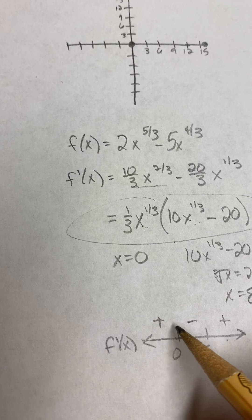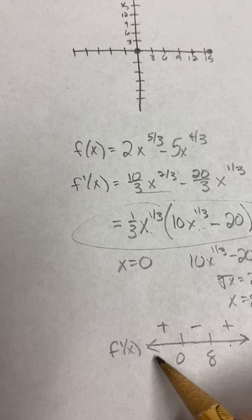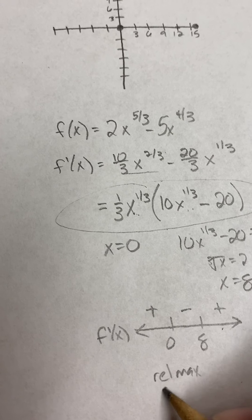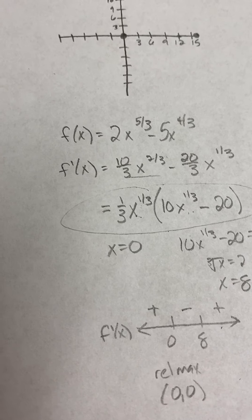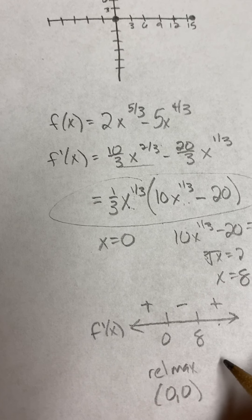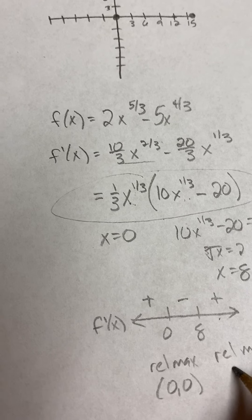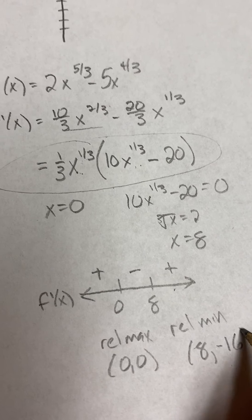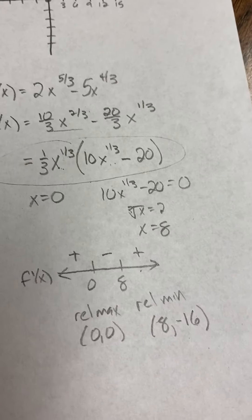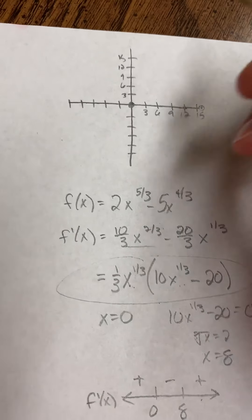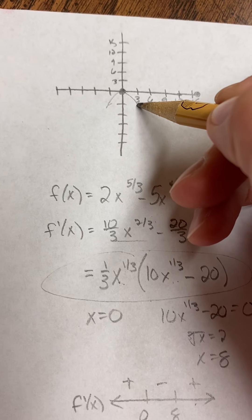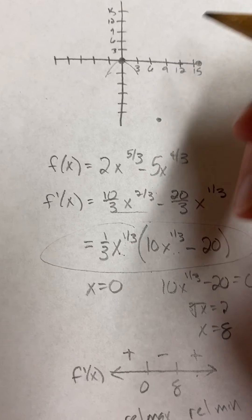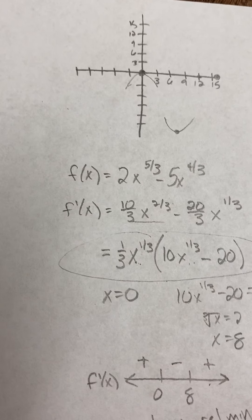So we are increasing, decreasing, and increasing. So if we switch from increasing to decreasing, that means we have a relative max at 0, 0. Here, we're going from decreasing to increasing, so we have a relative minimum at 8. And to find the y-coordinate, you just need to plug back in. I think negative 16. So plug back into the original. So we have a relative maximum at 0, 0. Okay, so this is somehow coming up and back down there. And then at 8, negative 16, which is down here, we have a relative minimum. So decreasing and going back up. Okay.